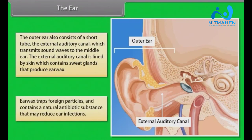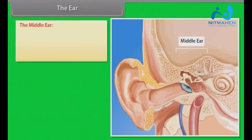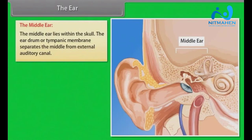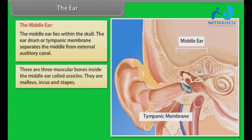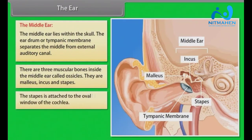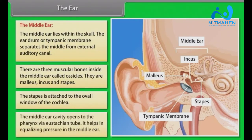Ear wax traps foreign particles and contains a natural antibiotic substance that may reduce ear infections. The middle ear lies within the skull. The eardrum, or tympanic membrane, separates the middle ear from the external auditory canal. There are three small bones inside the middle ear called ossicles: the malleus, incus, and stapes. The stapes are attached to the oval window of the cochlea. The middle ear opens to the pharynx via the Eustachian tube, which helps equalize pressure in the middle ear.